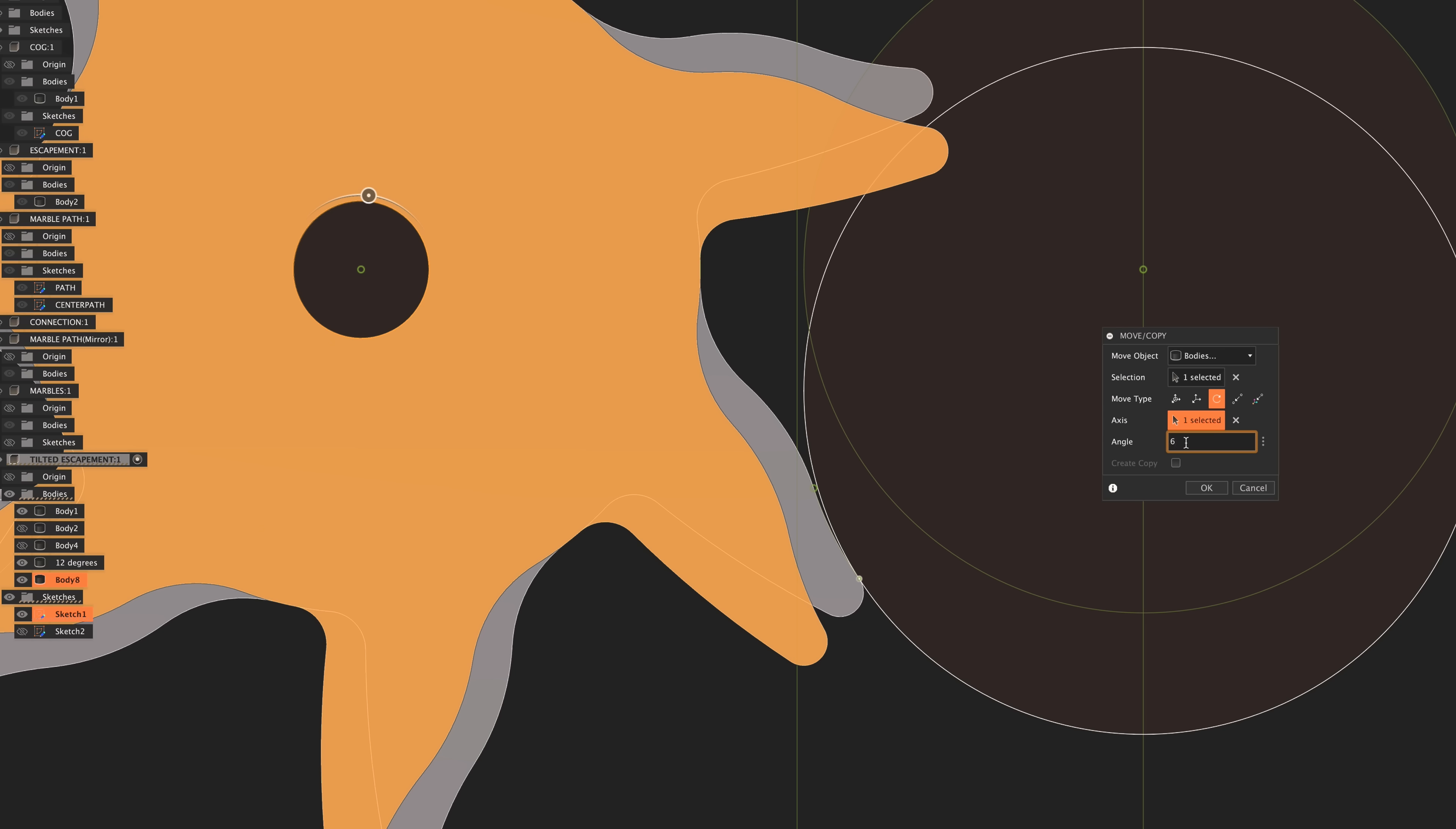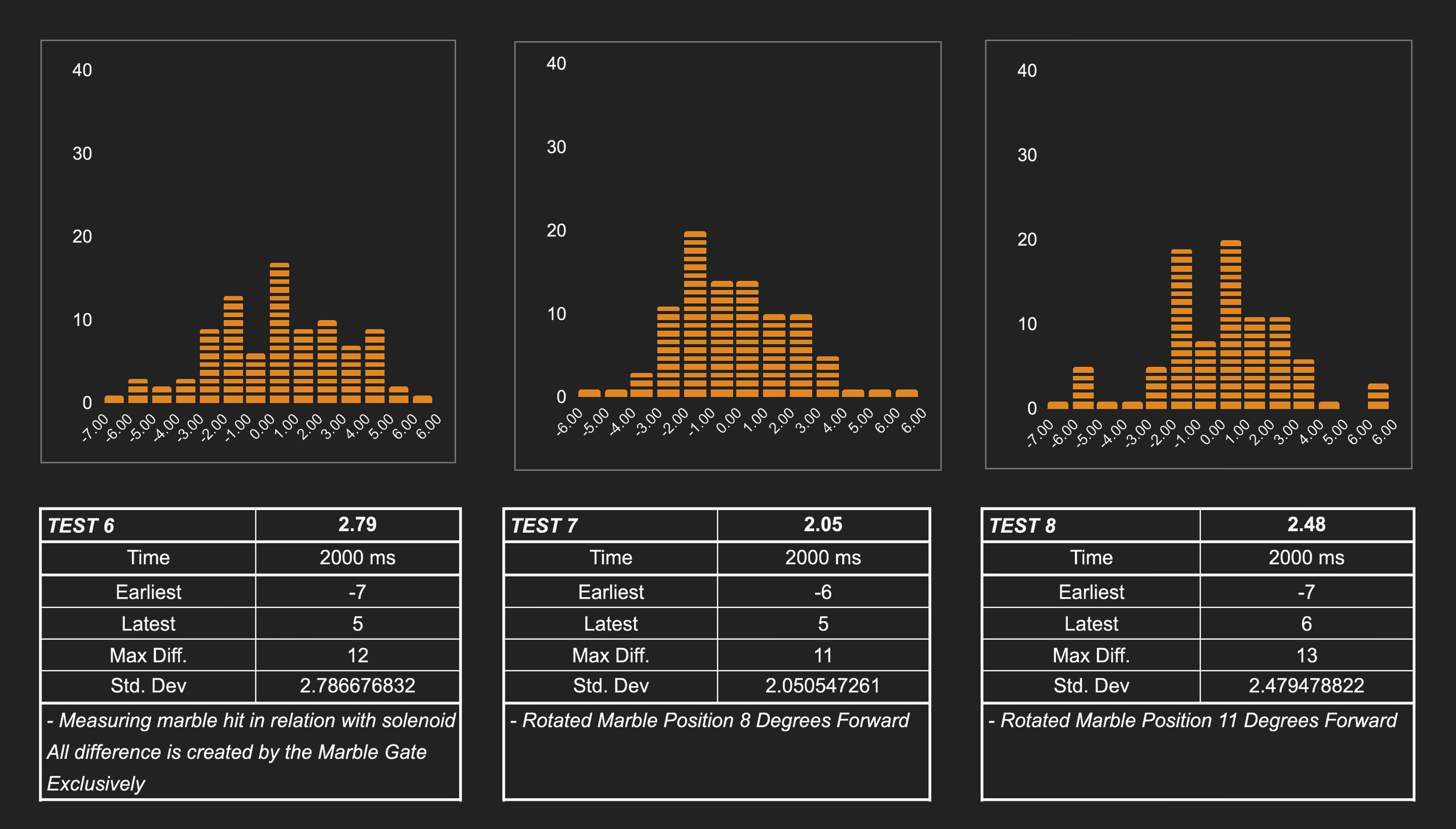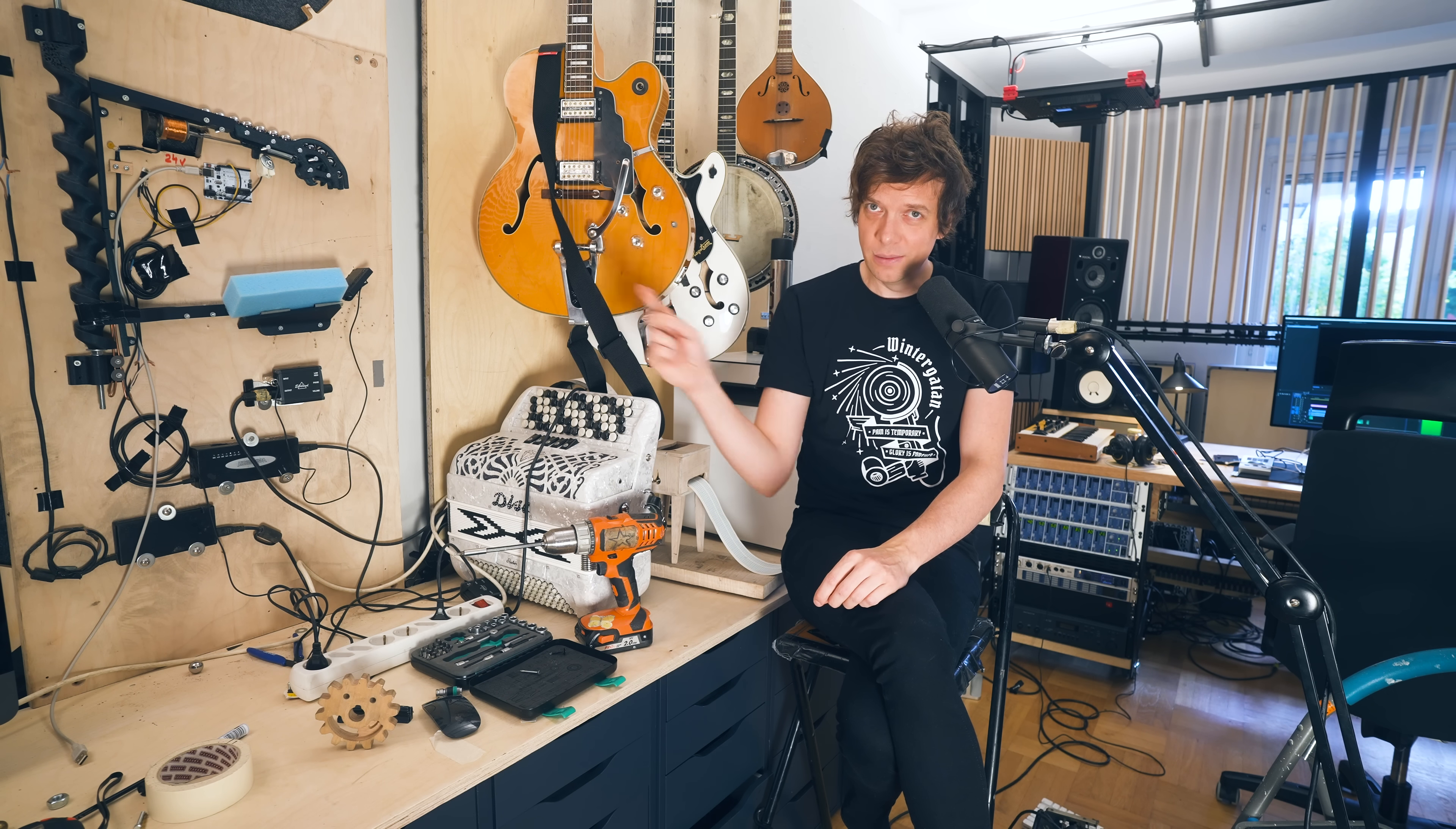Let's try 11 degrees. I designed yet another escapement arm with 11 degrees rotation, printed it, applied it to the test rig and tested it, and the result was disappointing. Rotating the marble position 11 degrees forward resulted in a standard deviation of 2.48. So definitely worse than the eight degree rotation. And this difference made me suspicious of my previous result. So I thought I'm just going to rerun the test where I had the 2.05 milliseconds with the eight degree rotation again. And I rerun the whole test and I got 2.8 millisecond standard deviation.